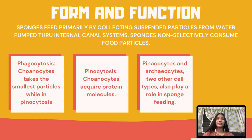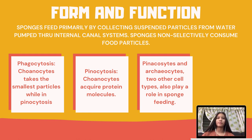Form and function. Sponges feed primarily by collecting suspended particles from water pumped through internal canal systems. Sponges non-selectively consume food particles. In phagocytosis, choanocytes take the smallest particles, while in pinocytosis they acquire protein molecules. Pinacocytes and archaeocytes, two other cell types, also play a role in sponge feeding.